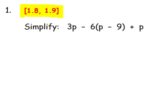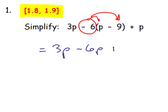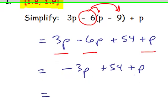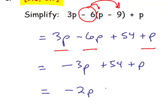Number 1. Simplify this expression: 3p minus 6 times the quantity p minus 9, plus p. The key thing here is recognizing that this minus sign goes with the 6. The sign in front of a term or number belongs to that term or number, so it's negative 6 that we distribute. This expression becomes 3p minus 6p plus 54 plus p. Gathering all the like terms: negative 3p plus 54 plus p, which combines to negative 2p plus 54.